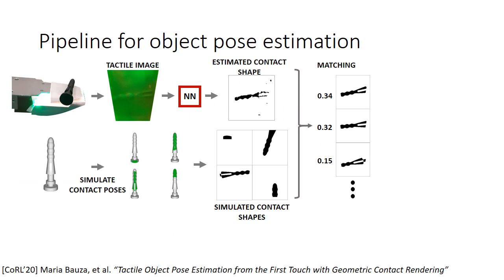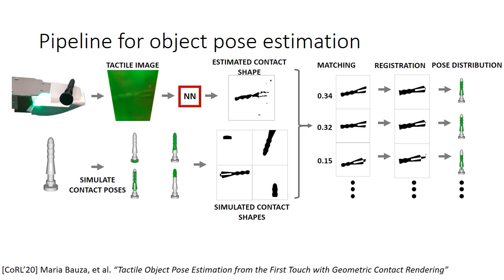Finally, once we have those pose distributions, we take into account that our contact shapes are images that can be transformed into point clouds. Therefore, we can use registration techniques to locally improve the transformation for the pose of the object with respect to the sensor. After all, we get pose distributions that we can use in several settings, including adding other constraints from external perception systems or multiple contacts.